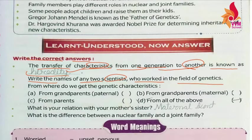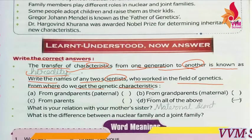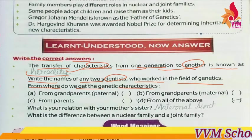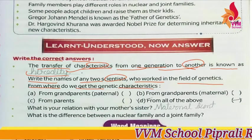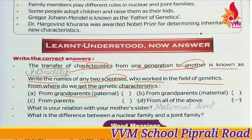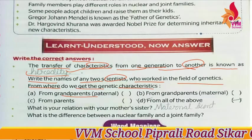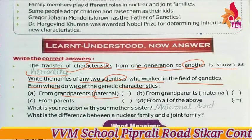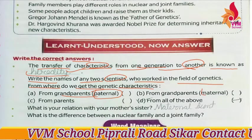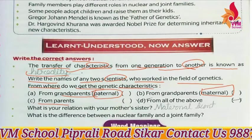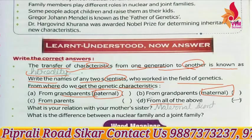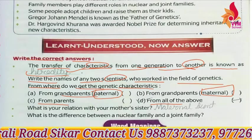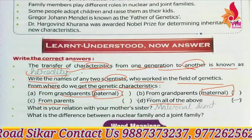Next we have: from where do we get the genetic characteristics? Genetic characteristics — where do we get them from? From grandparents — paternal grandparents and maternal grandparents, from all of them we get our genetic characters.